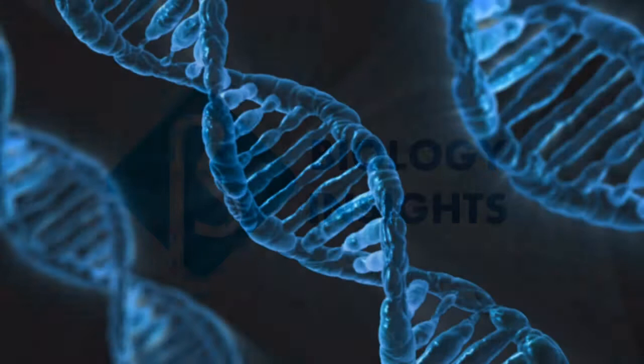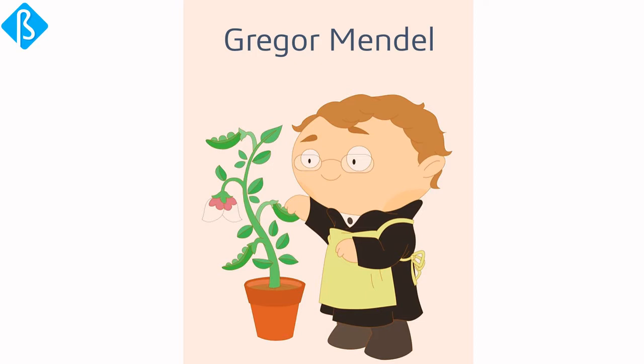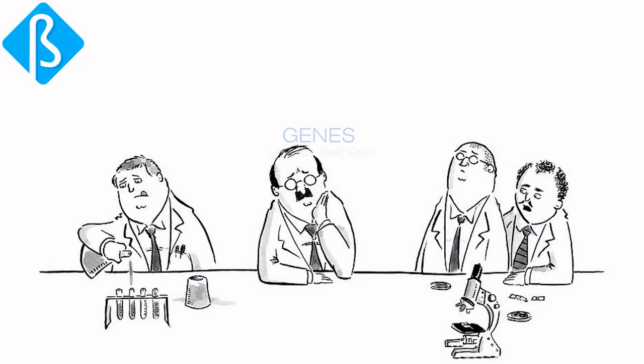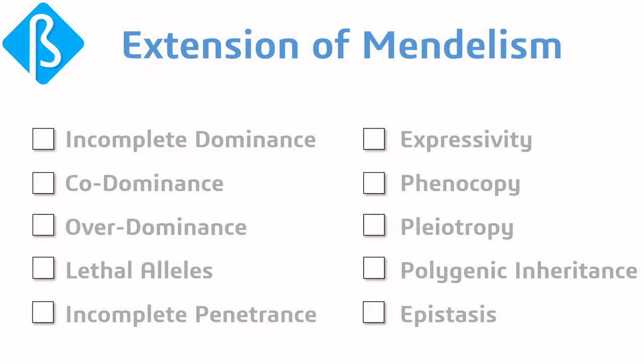Hello everyone, this is Biology Insights and welcome back to another video lecture of the series Inheritance Biology. When we talk about inheritance, we are reminded of Mendel, who started genetic experiments. Mendel was lucky enough to get pretty simple expression of genes — one dominant and another recessive. As science expanded, we found scenarios beyond Mendelism, and we call these extensions of Mendelism.